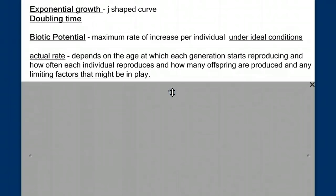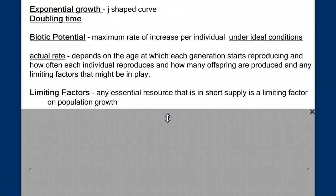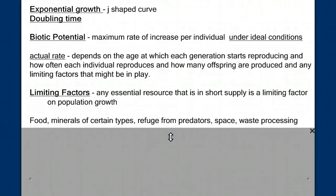Let's talk about these limiting factors and what they mean. Limiting factors are any essential resource that is in short supply and is a limiting factor on the population growth. Stop the video now and write down all the things that could limit a population's growth. What types of things did you come up with? Probably food, maybe minerals, refuge from predators, places to hide, space, just physical space, and waste processing. You may be able to have a lot of individuals, but those individuals produce waste that we need to filter out of our environment. All of those factors can limit how much a population can grow.